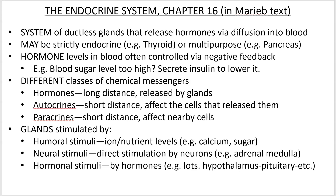There are three different kinds of chemical messengers, which we'll touch on here and there. We're mostly going to concentrate on hormones. Autocrines — auto meaning self — are chemical messengers that affect the cell that releases them. Paracrines are short-distance messengers, similar to hormones, secreted by one cell and received by nearby cells.